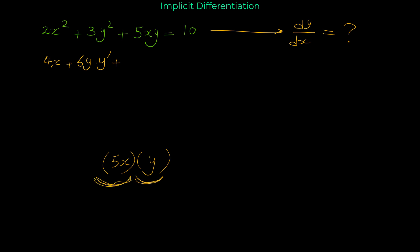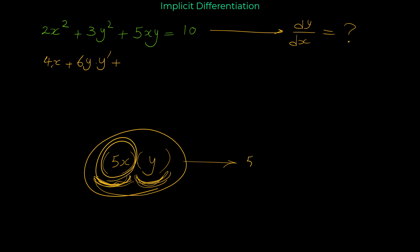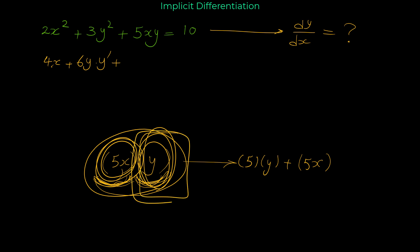For finding the derivative of 5xy, note that 5xy is 5x times y — two expressions multiplied together — so we use the product rule. The derivative of 5x is 5, times the second function y, plus the first function 5x times the derivative of y. The derivative of y is y prime, so we write y prime. Therefore the derivative of 5xy is 5y plus 5x·y′, equals 0.